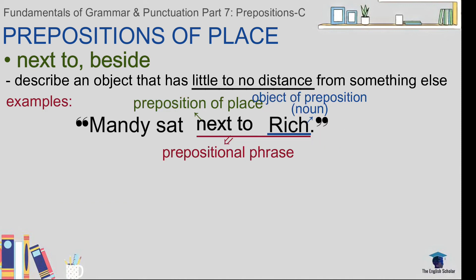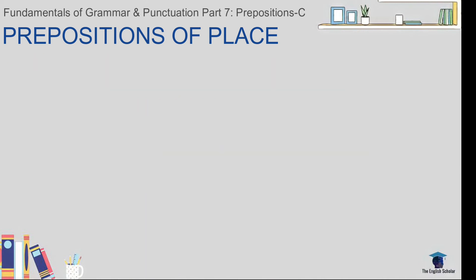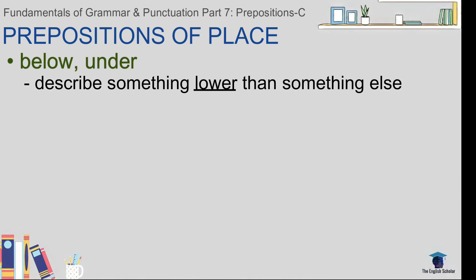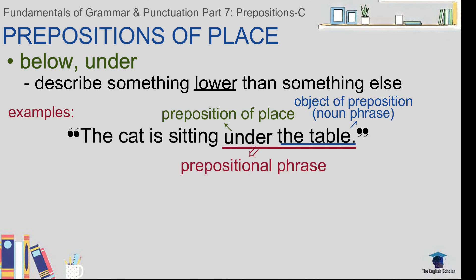Another example: 'Mandy sat beside / next to Rich' — meaning Mandy was very close to Rich because she sat beside or next to him. Next: 'below' and 'under.' These prepositions describe something lower than something else. For example: 'The cat is sitting below / under the table.' Another example: 'I think I left my pen below / under the computer.'